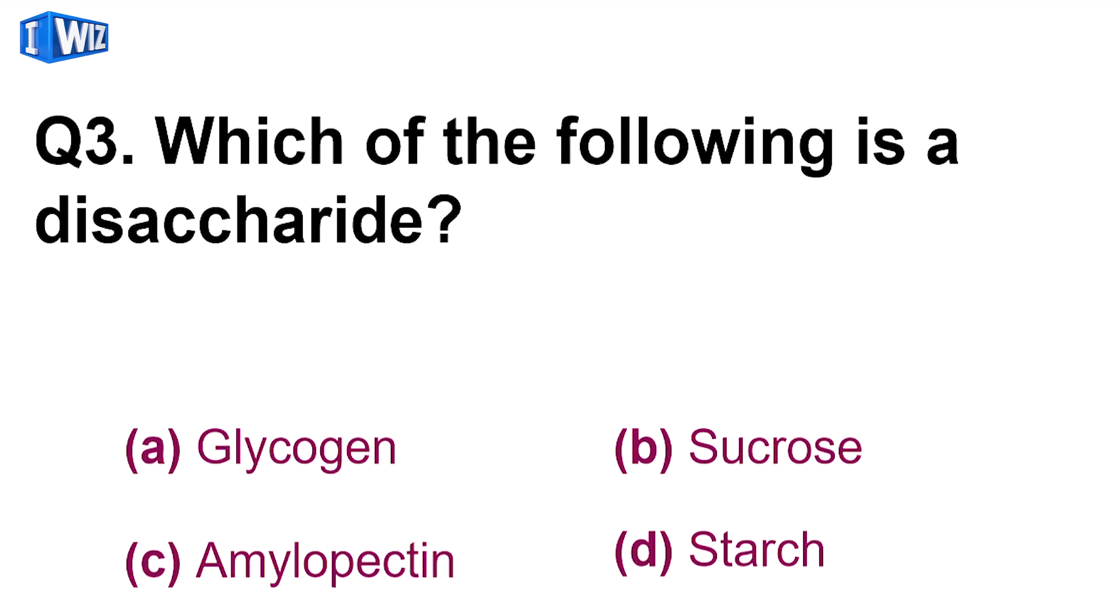Next is, which of the following is a disaccharide? Disaccharide wo hoota hai, jo doh monosaccharides ko join kar ke bantah hai. In mein se jo disaccharide hai, wo hai sucrose, which is combined form of glucose and fructose. So B is the correct option.